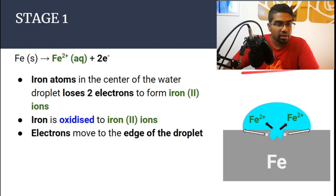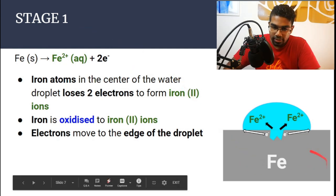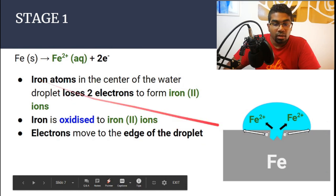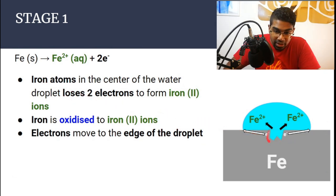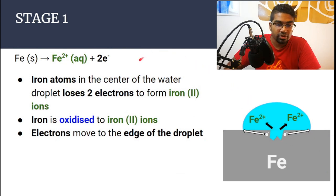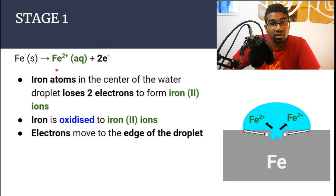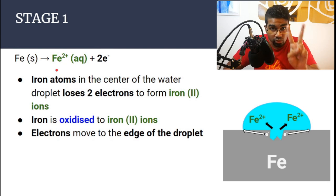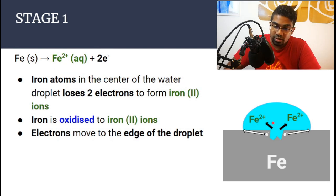Let's look at the first stage of rusting. This is iron, and this is a water droplet on the iron. The iron atoms in the middle of the water droplet, at the center of the water droplet, will start to give away two electrons to form iron-2 ions. Take note that even though rust is iron-3 oxide, the first step is the formation of iron-2 ions.